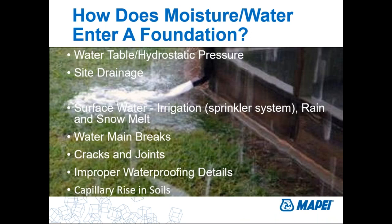Water takes the path of least resistance. Sources of water intrusion include hydrostatic pressure from the water table, site drainage or inadequate site drainage, surface water from rainstorms, improperly directed sprinklers, snow melt, and capillary rise in soils. Other entry points include a nearby water main break, improper waterproofing details at that location, no waterproofing at all, or maybe just damp proofing with cracks and joint movement — that's how water gets into a building.